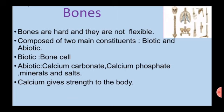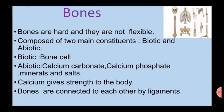Calcium imparts strength to the bones. Bones are connected to each other by ligaments. The skeletal system gives a definite shape to the body, provides support, and protects the delicate organs inside. It is composed of around 270 bones at birth, and this total decreases to around 206 bones by adulthood after some bones get fused together.